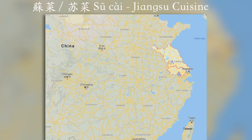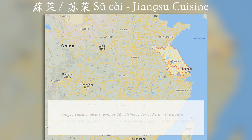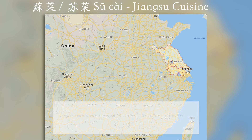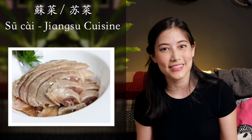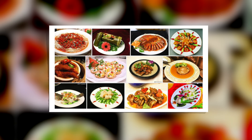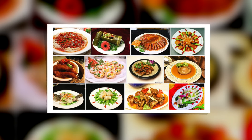苏菜 (Sū cài) cuisine has one of my favorite dishes, which is 盐水鸡 (yánshuǐ jī). No longer for me since I'm vegetarian, but it also is home to tons of delicious dishes.